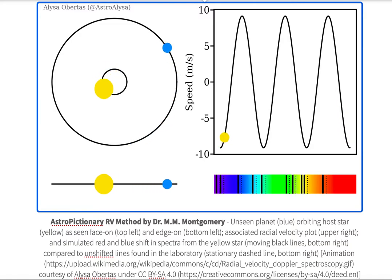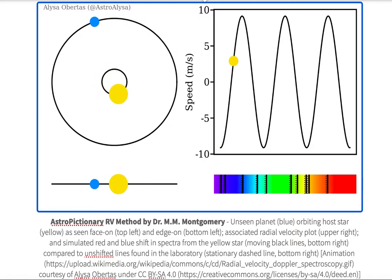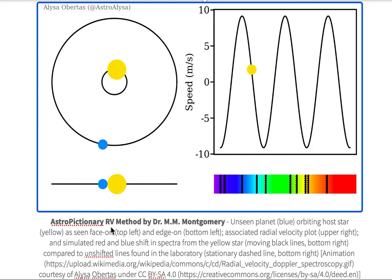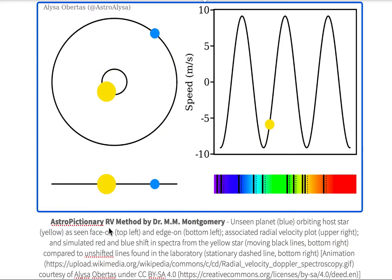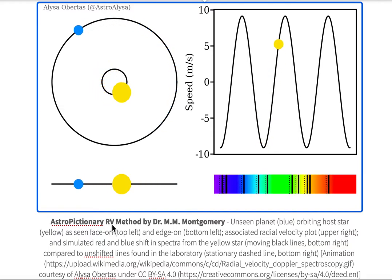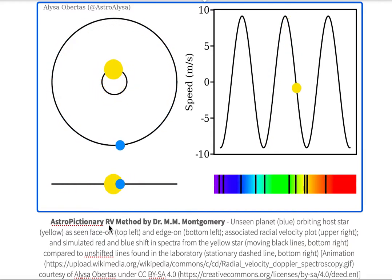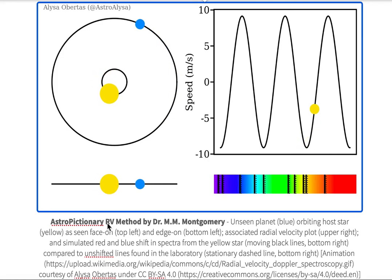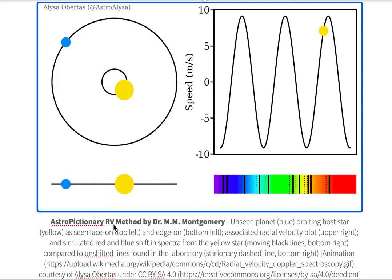In this video we're going to qualitatively go over the radial velocity method. We're not going to do any math. The radial velocity method is shortened to be the RV method — R for radial, V for velocity.